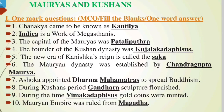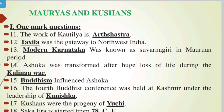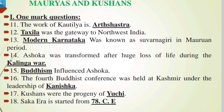Next question: Maurya empire was ruled from ___. Answer: Magadha. Next, the 11th question: The work of Kautilya is ___. Answer: Arthashastra. ___ was the gateway to North West India. Answer: Takshila.